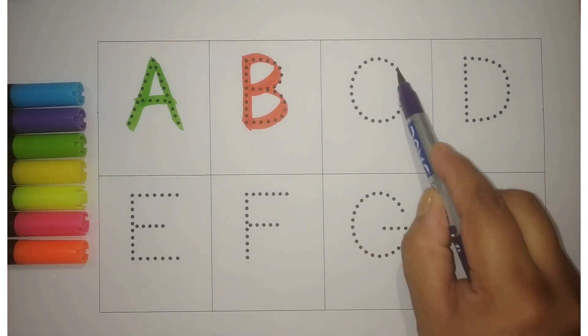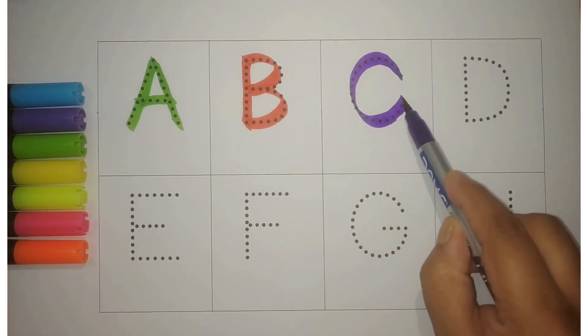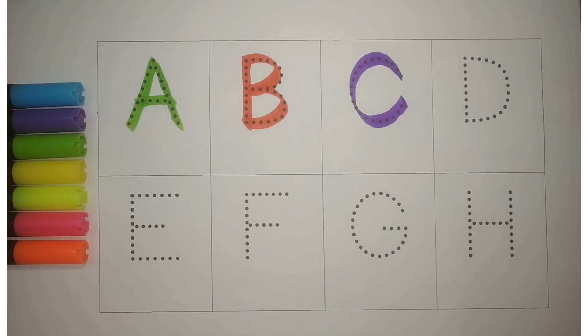Purple C. C for cat, billi, meow meow. Blue D. D for dog, kutta, bow bow.